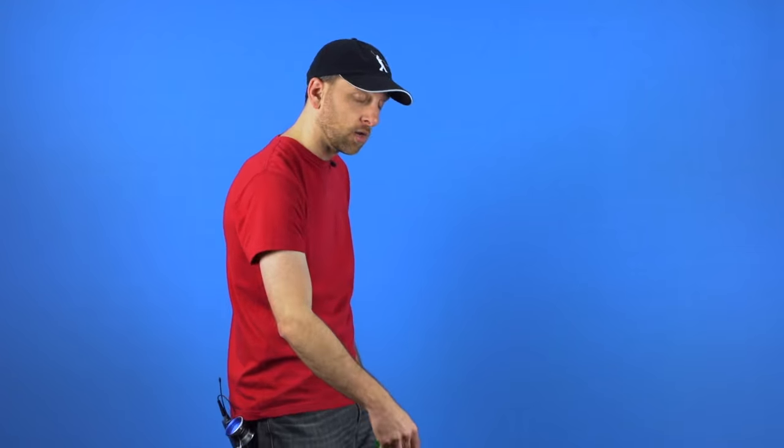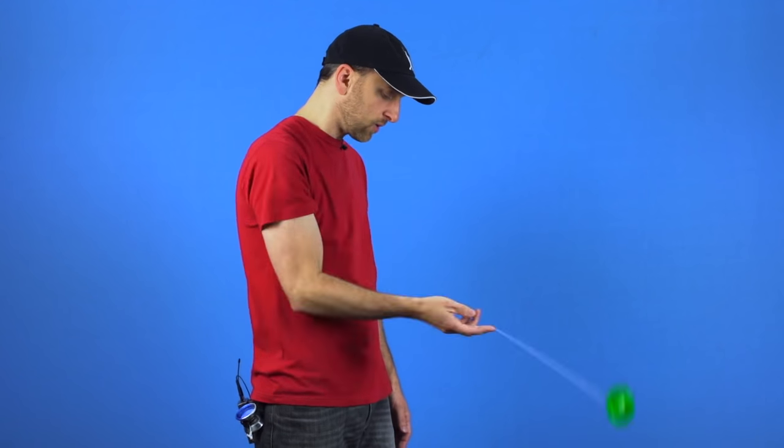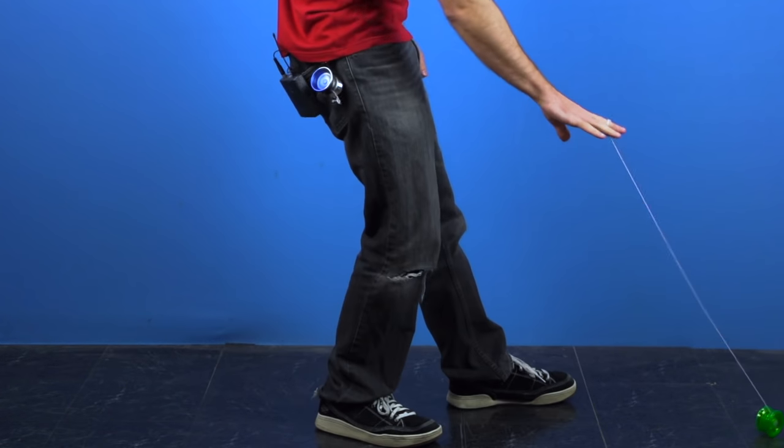Now when you want to bring the yoyo back to your hand, there are two ways to do it. The first way is you could just pull the yoyo up to bring it back. Or you could do what I just showed you. You could intentionally move your hand toward the yoyo. And you can see that that works just as well.